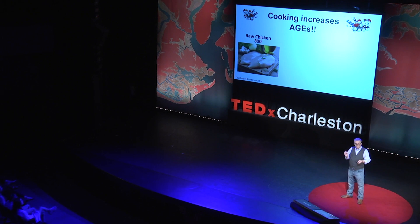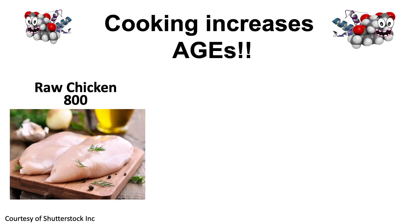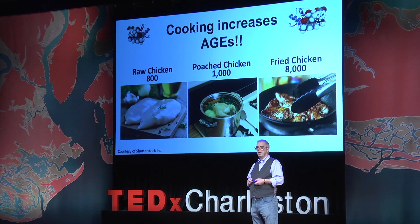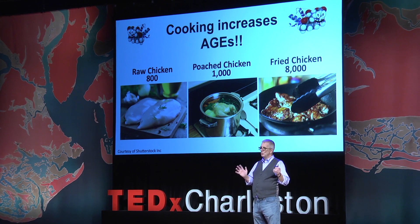Unfortunately, that's not the end of it — the way we cook our foods also increases the AGE content. For example, three ounces of raw chicken has around 800 AGE units. Use moist heat such as boiling or poaching, and that goes to about 1,000. Use dry high heat, and it goes straight to 8,000 units — just from the way we cook our food. Now, at the start of this talk I said I was going to spoil your day — if I haven't started to do that already, the next slide's a doozy.